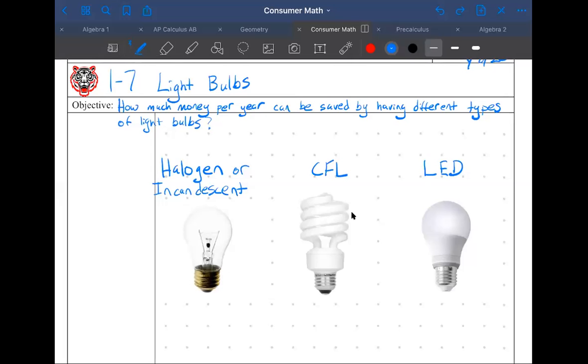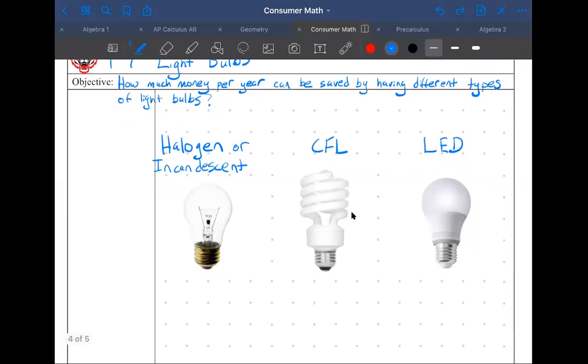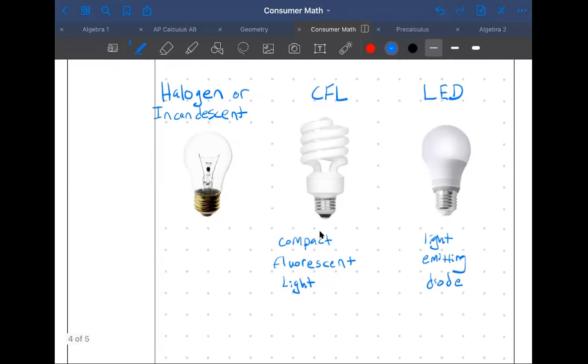What does CFL stand for? It stands for a compact fluorescent, F-L-U-O-R-E-S-C-E-N-T, compact fluorescent bulb or light. LED is light emitting diode. I think that's how you spell diode, but you guys can always correct me. I'm the math teacher, not the English teacher.